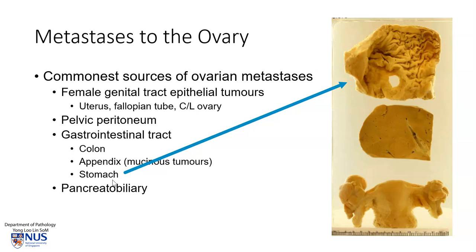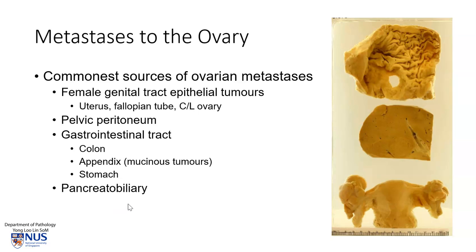The stomach is also an important, not uncommon source of metastasis to the ovary, and the stomach is often the culprit and the source of a Krukenberg tumor, which we'll talk about shortly. The pancreas and the biliary tract are also sources of metastasis to the ovary.